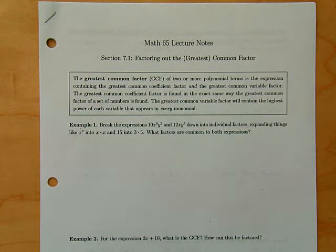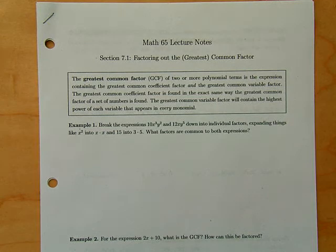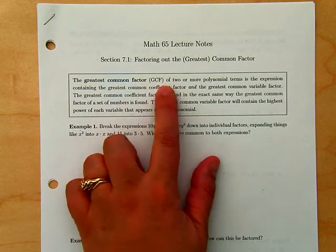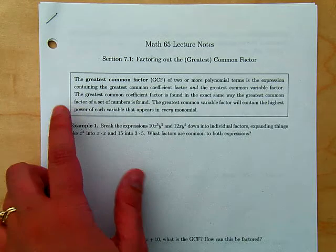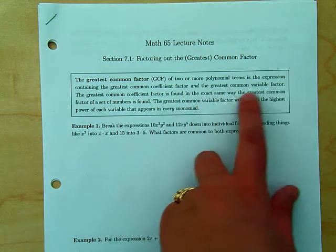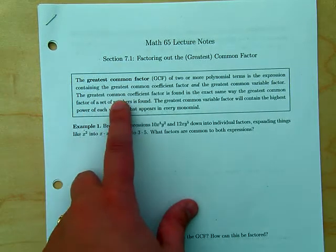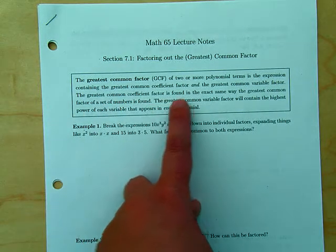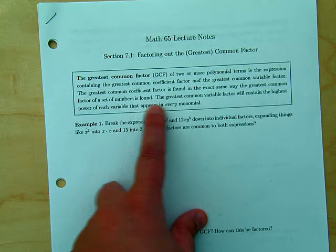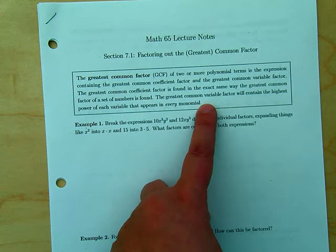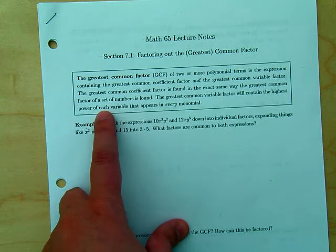In 7.1 we're going to look at factoring out the greatest common factor, which takes us back to math 20 where we first talked about GCF. The greatest common factor of two or more polynomial terms is the expression containing the greatest common coefficient factor and the greatest common variable factor. The greatest common coefficient factor is found the same way as the GCF of a set of numbers, and the greatest common variable factor contains the highest power of each variable that appears in every monomial.